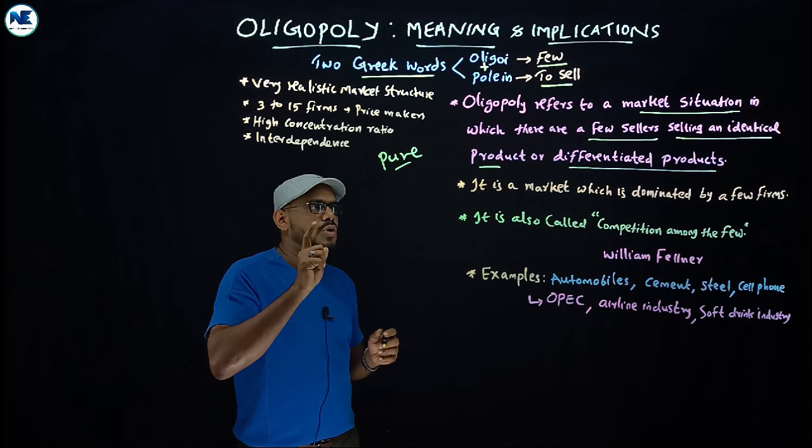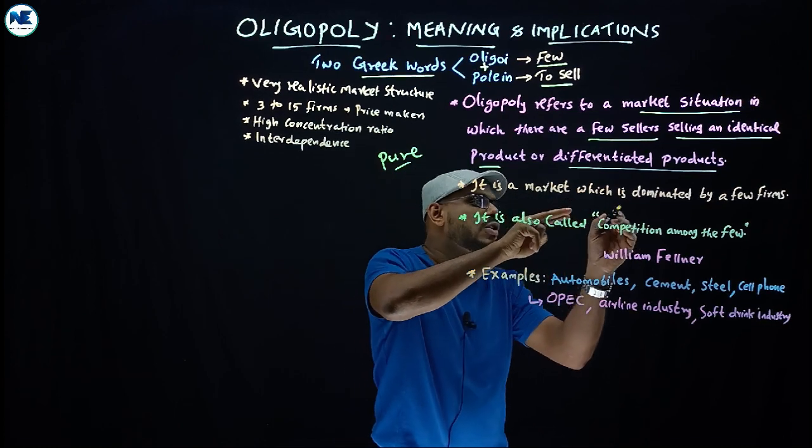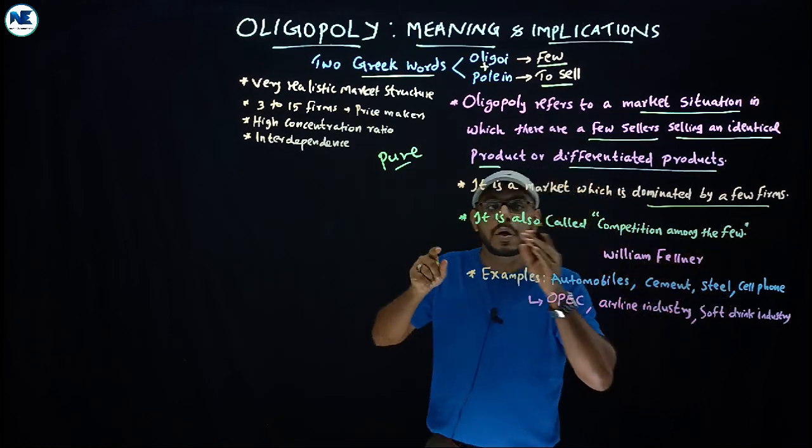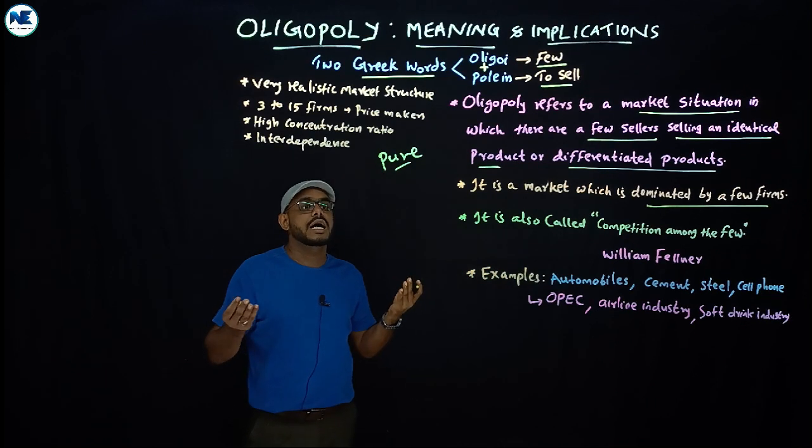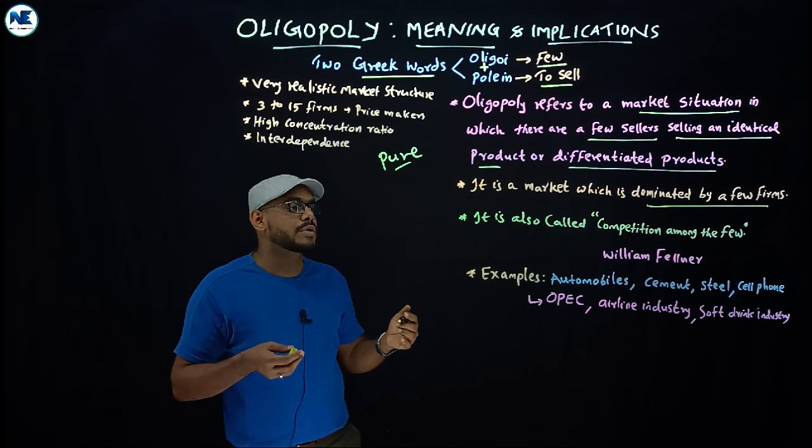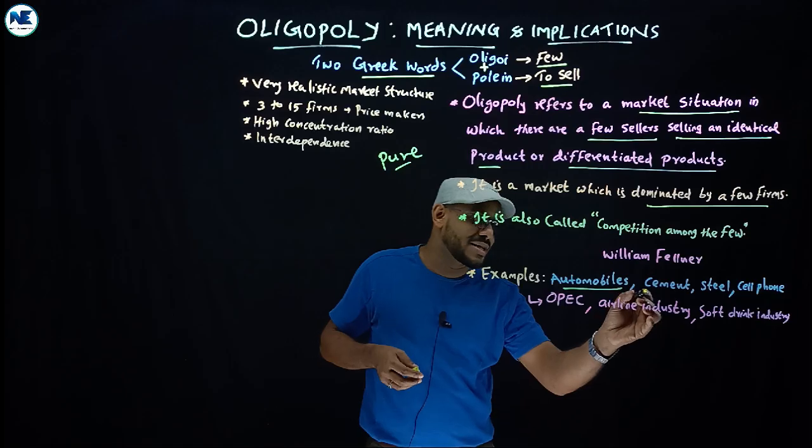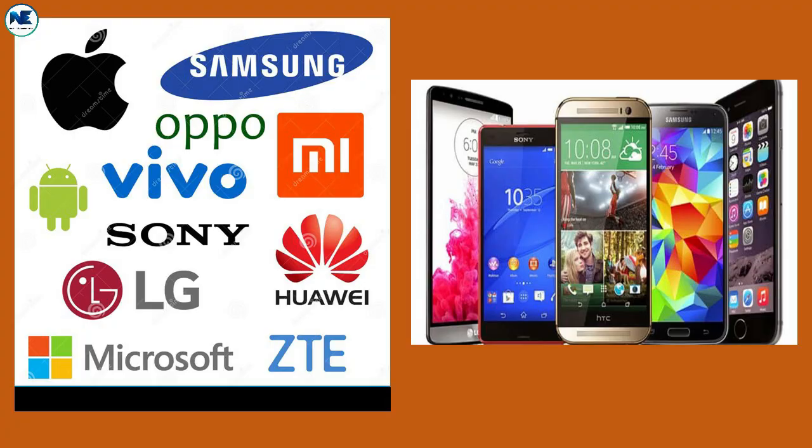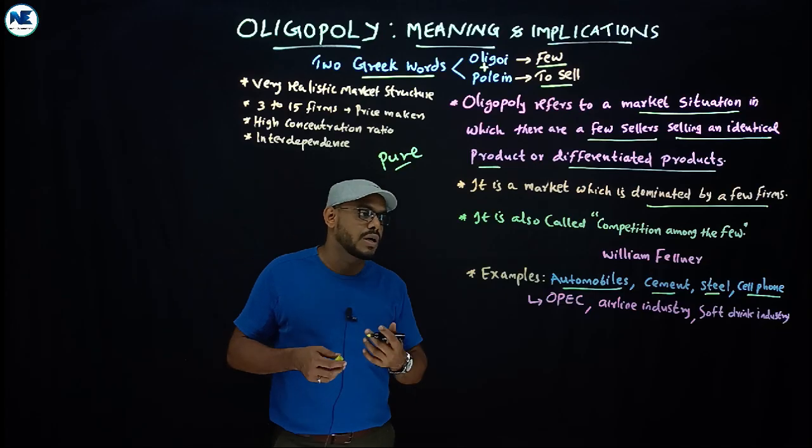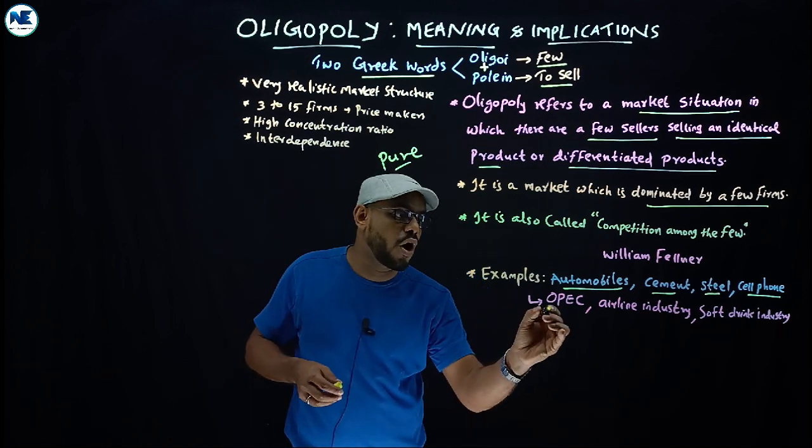You also understand that oligopoly is a market which is dominated by a few firms. There are a number of real-life examples: automobiles, car industry, auto industry, then cement, steel, cell phones—we can see Apple, Samsung, Nokia, and so on.